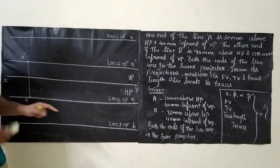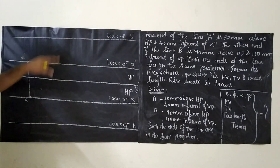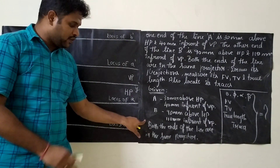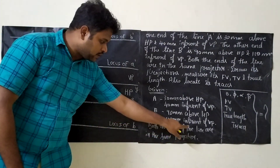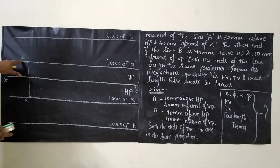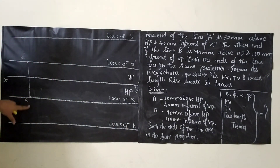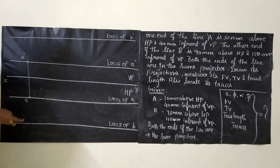We know that for marking B and B' we have only one hint from the given data: both the ends of the line are lying in the same projector. It means A' and B' will be lying on the same line, and A and B will be lying on the same line, so we can easily get the front view and top view.